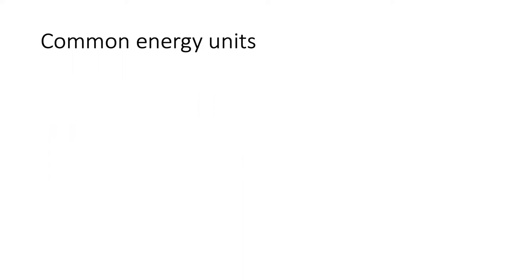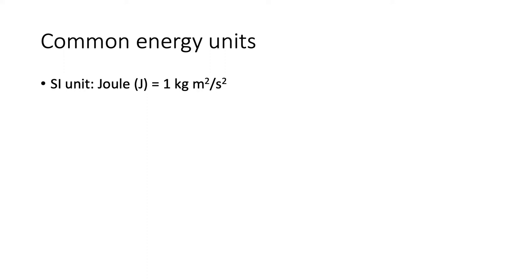Let's also talk about some energy units. The SI unit is the joule, defined as one kilogram meter squared per second squared. If you're wondering where that comes from, it comes from the equation for kinetic energy, where kinetic energy is mass times velocity squared.